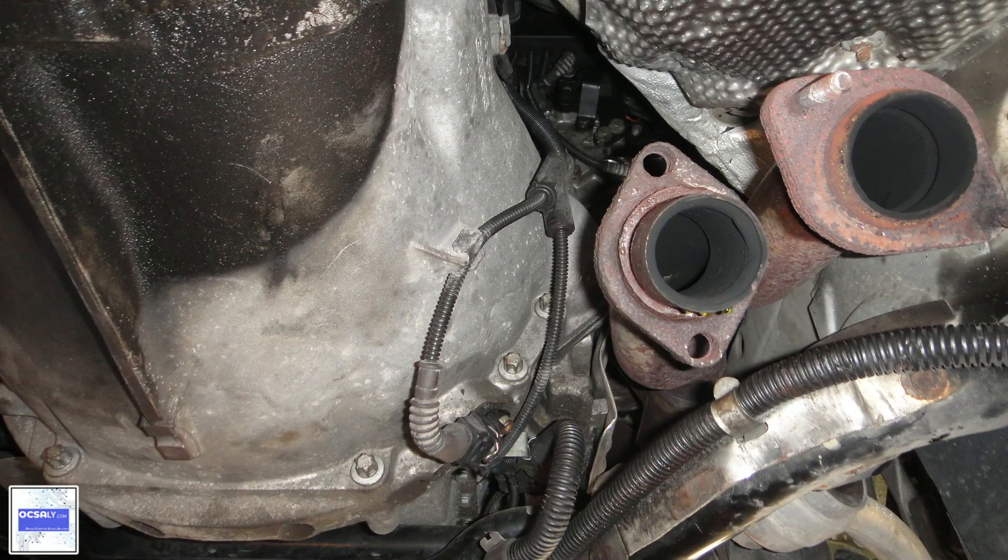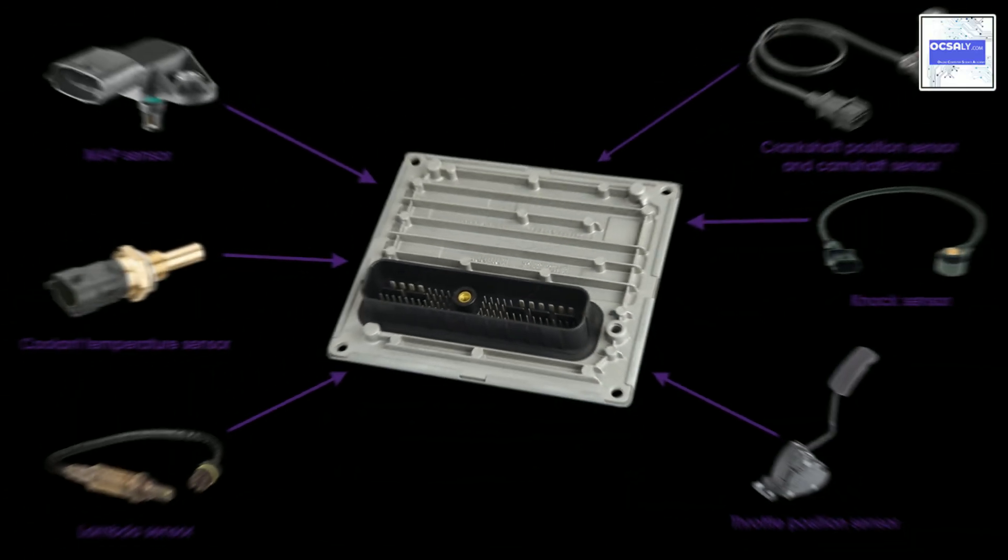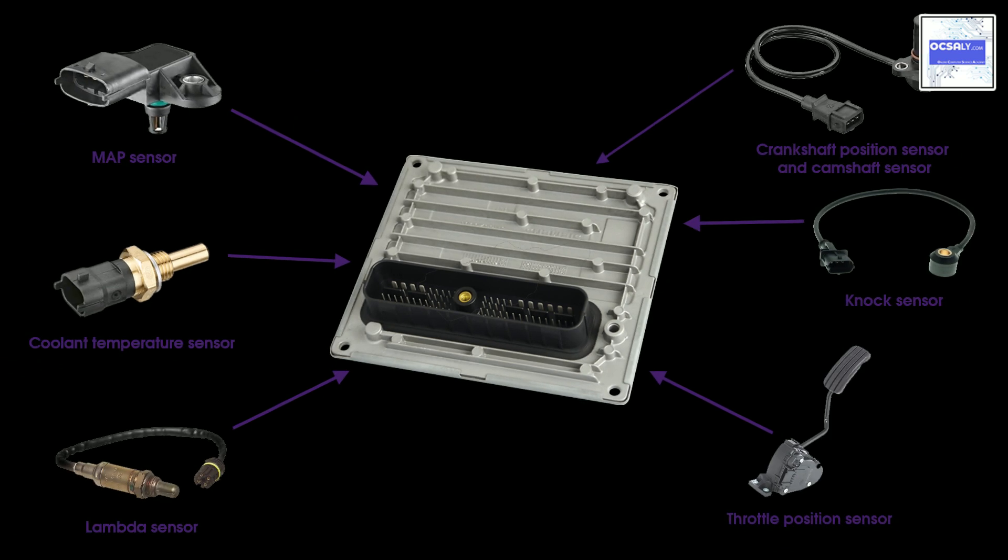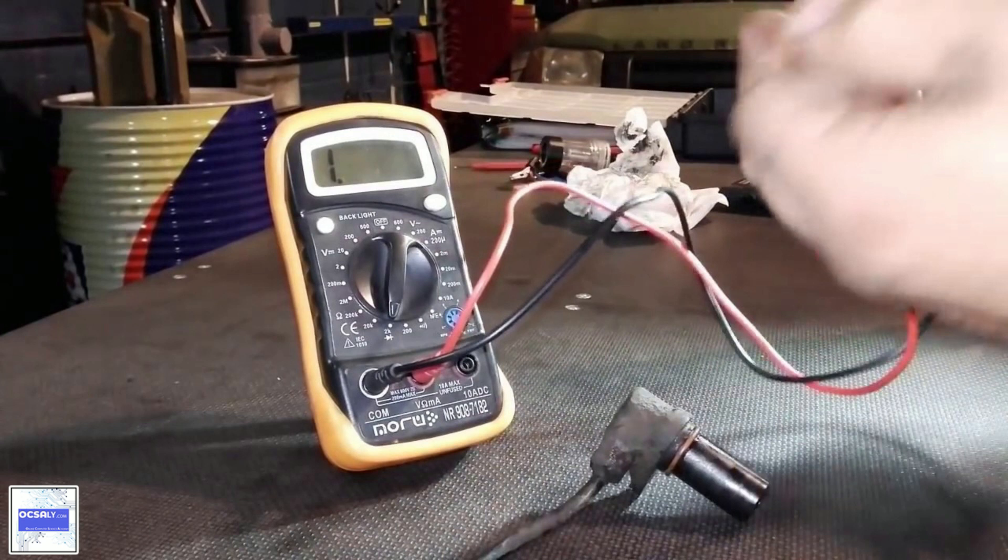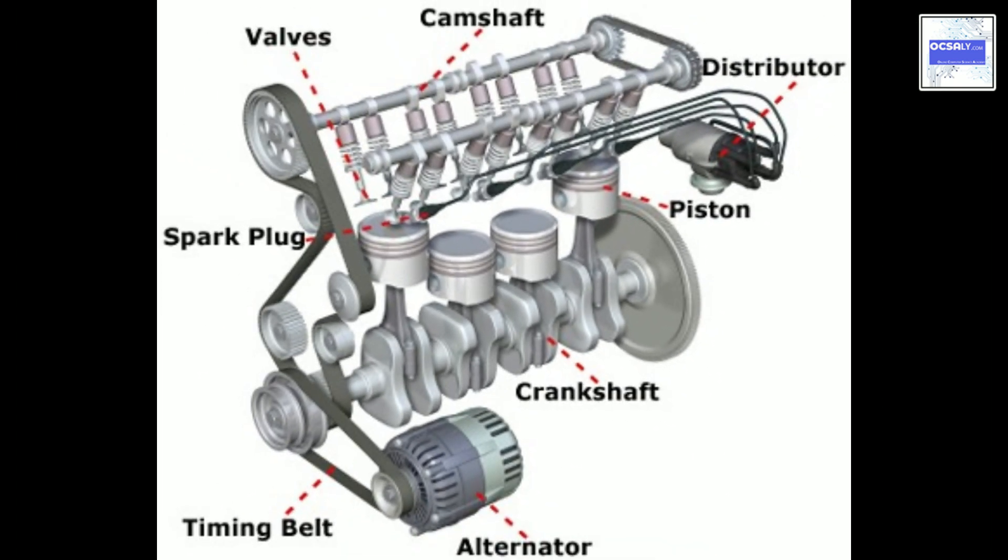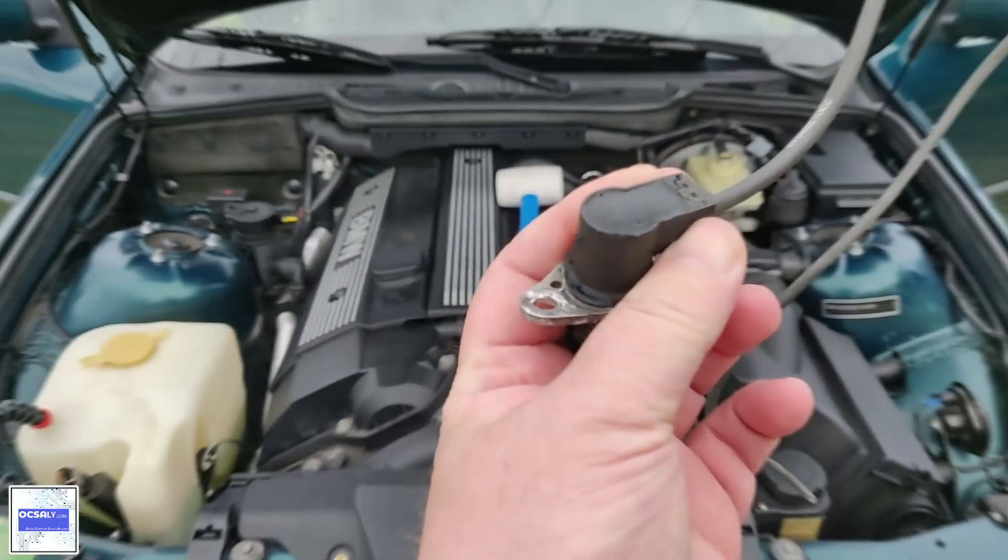As the crankshaft rotates, the sensor produces a pulse voltage signal, where each pulse voltage corresponds to the tooth on the reluctor ring. As you can see in this photo, the actual signal from the crankshaft position sensor with the engine idling.